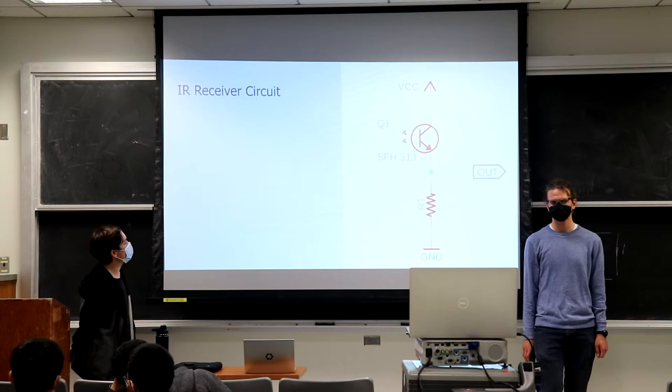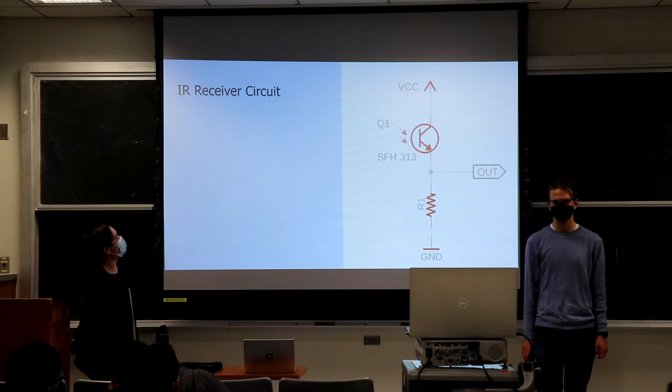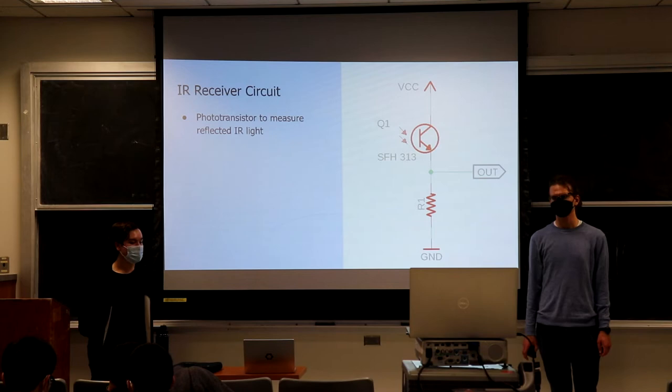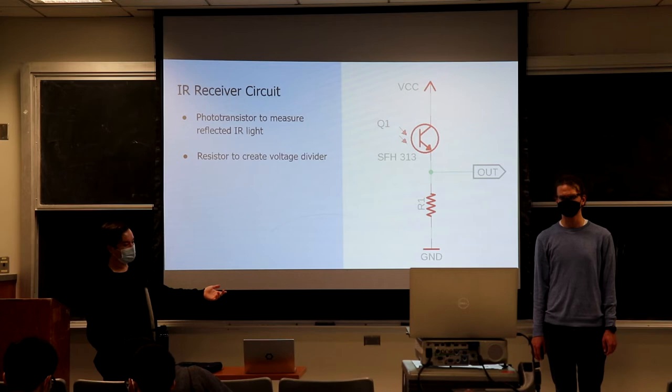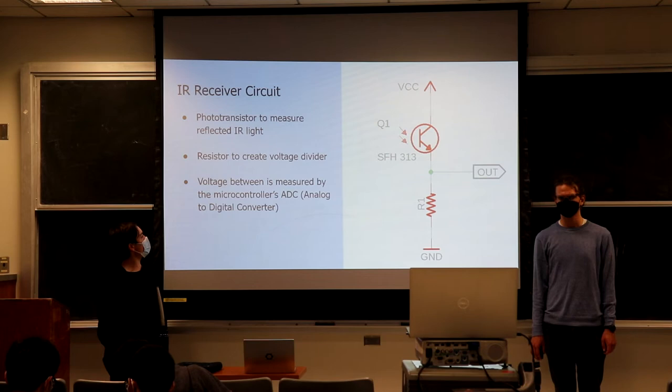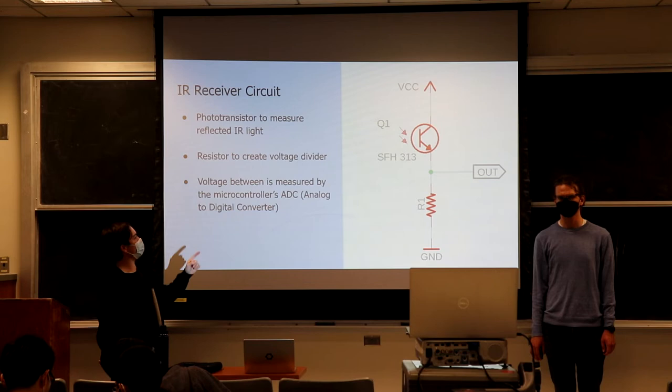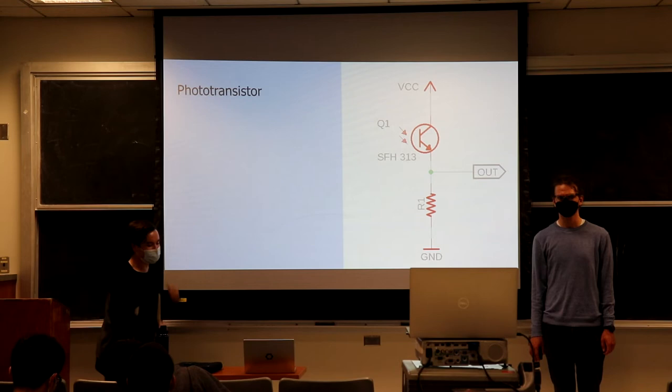Our IR receiver circuit is a lot simpler. We have our phototransistor, which measures our reflected IR light, and our resistor here creates a voltage divider. The voltage between them is measured by our microcontroller at the output pin using the analog-to-digital converter.